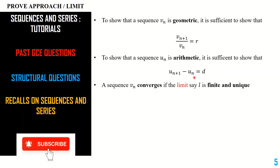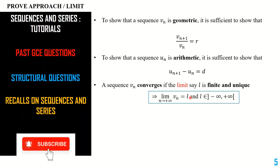A sequence Vn converges if its limit is (1) finite and (2) unique. This means the limit equals some value L belonging to the set of real numbers, and that value is unique. Finite means L is a real number; unique means there is only one value of the limit as n tends to infinity. If the sequence has two different limit values, you conclude it diverges, because it is impossible for a sequence to have two different limits.